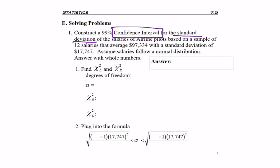And notice it gives us what the sample average is of those 12 pilots, but we're not going to need that. And even though it just says a standard deviation of $17,747, that's obviously a sample standard deviation for two reasons. One, it's in the sentence about the sample, about the 12 salaries. And number two, if we had the population standard deviation, we wouldn't need to make a confidence interval to try to figure out what it is.